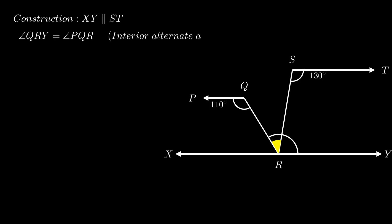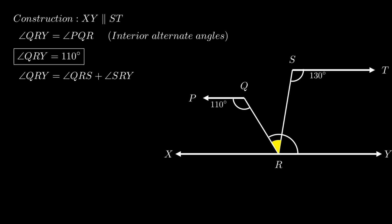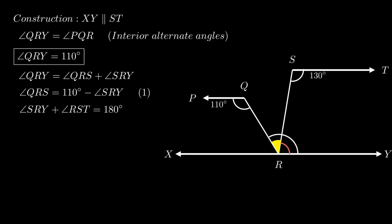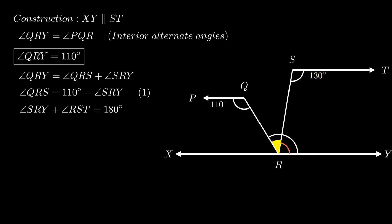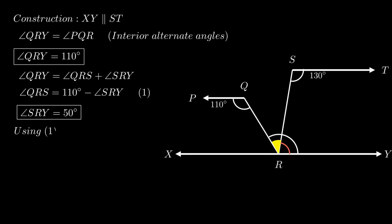Angle QRY equals angle PQR as interior alternate angles are equal in parallel lines, so angle QRY equals 110 degrees. From the figure, angle QRY equals the sum of angle QRS and angle SRY. Since angles SRY and RST are co-interior angles on transversal SR, their sum equals 180 degrees. As angle RST equals 130 degrees, angle SRY equals 180 minus 130 = 50 degrees. Therefore angle QRS equals 110 minus 50 = 60 degrees.